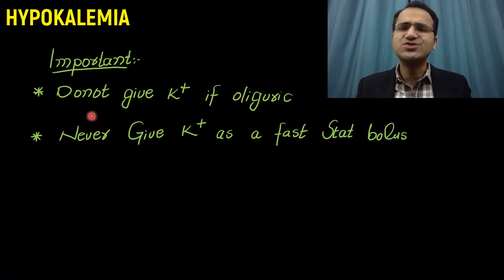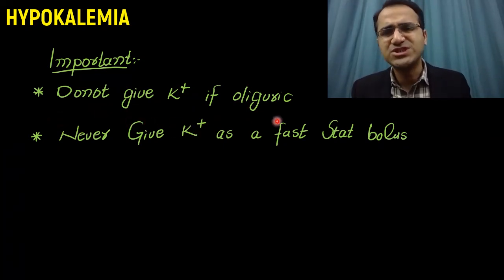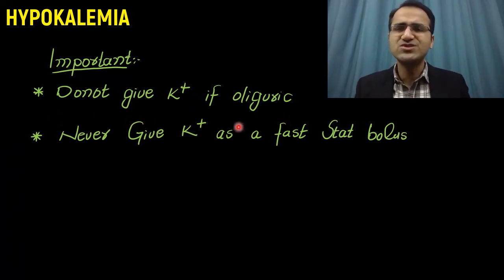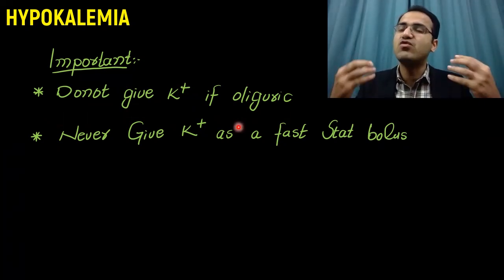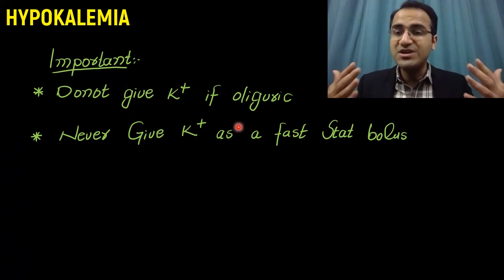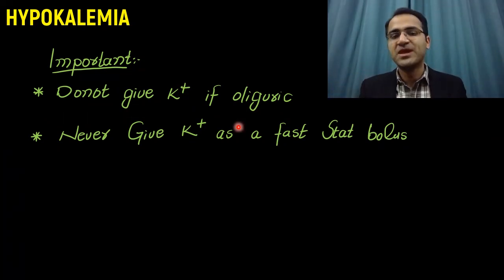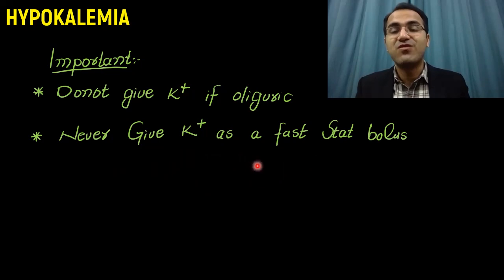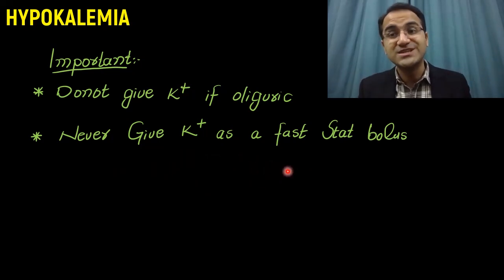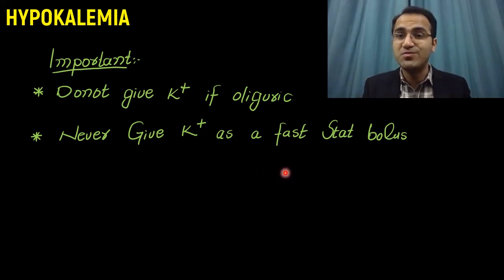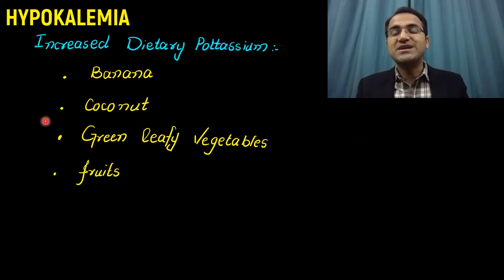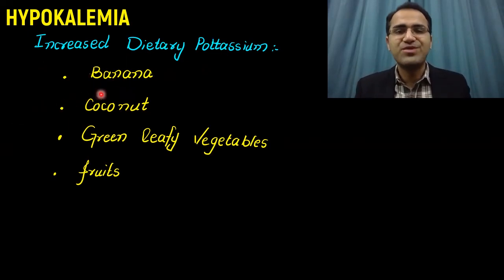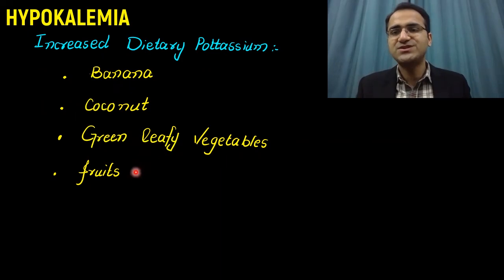Do not give potassium if the patient is oliguric, as they cannot excrete excess potassium and will develop hyperkalemia. Never give potassium as a fast IV bolus. Patients with hypokalemia should be recommended a high-potassium diet including banana, coconut water, green leafy vegetables, and fruits.